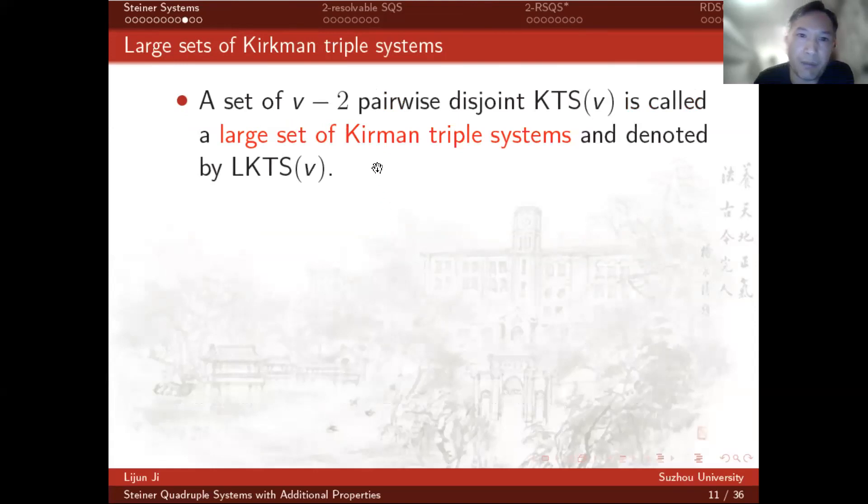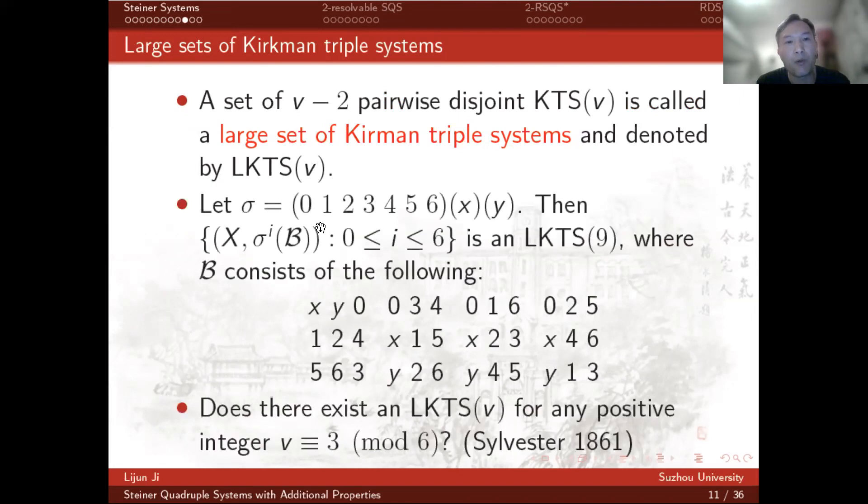A set of v minus 2 pairwise disjoint KTS is called a large set of Kirkman triple systems and denoted by LKTS(v). For example, when the permutation sigma acts on the block set of a KTS of order 9, then we can obtain seven disjoint KTS of order 9. They form a large set of Kirkman triple systems.